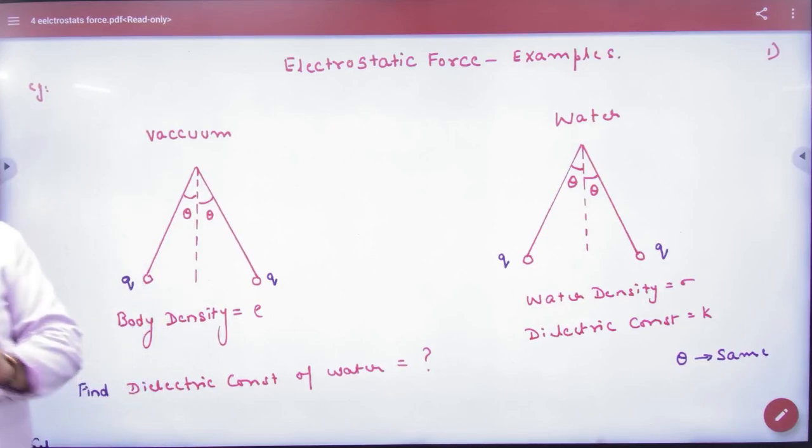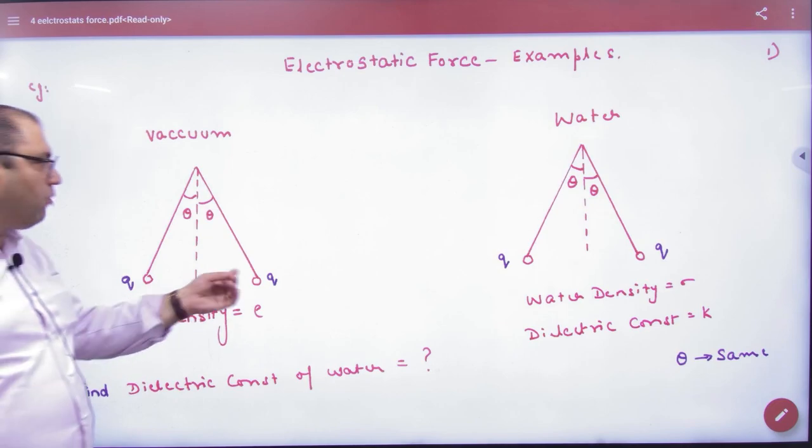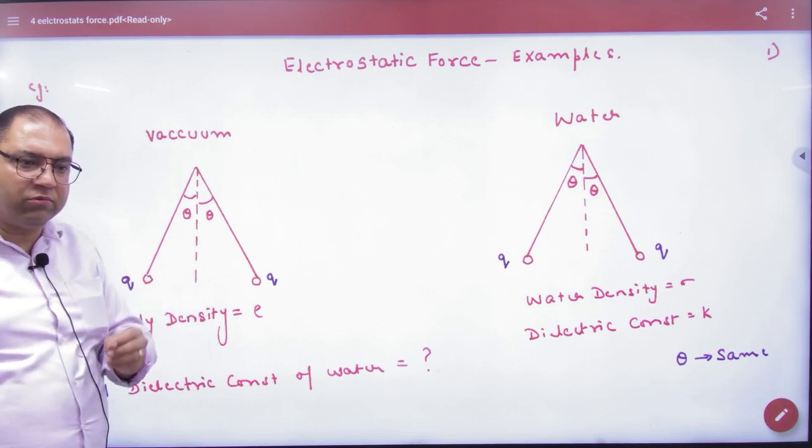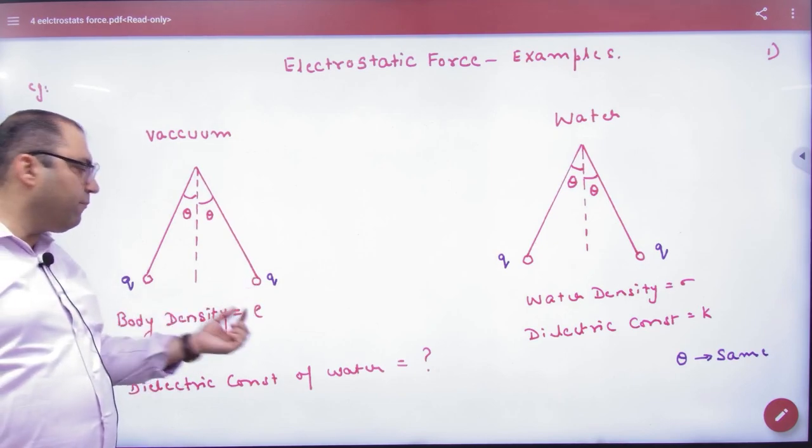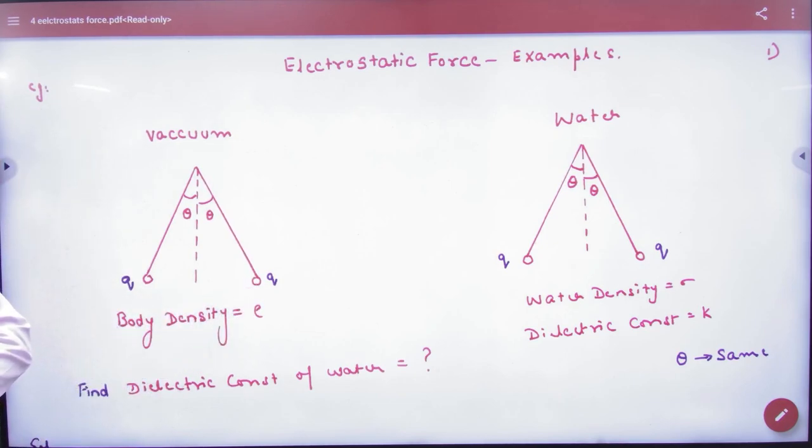In the electrostatic force, you will get a question in a very good book. Suppose you have two charges and these two charges are on the bob, and they repel in front of you. The density of the body of the bob is rho, and this is in equilibrium.